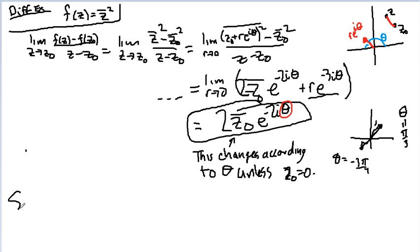So the conclusion: f of z equals z conjugate squared is only differentiable at z equals zero.